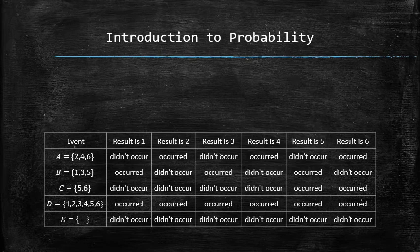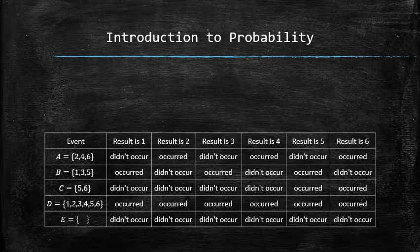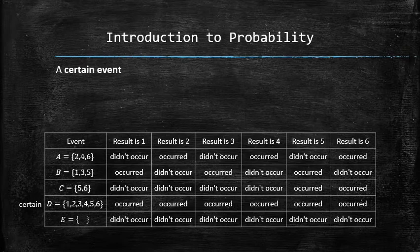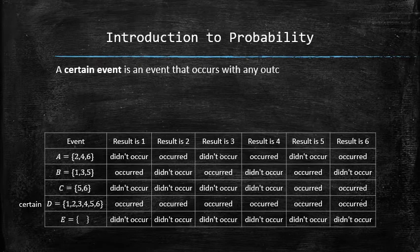Notice that in the ongoing example, event D is the entire sample space. As strange as it may look, event D satisfies the definition of an event and therefore has to be treated as such. Since D occurs for any outcome of the experiment, we call D a certain event.